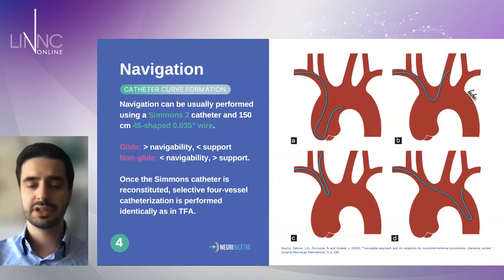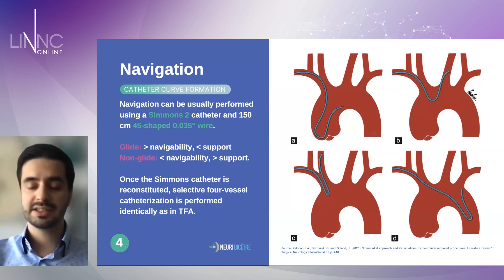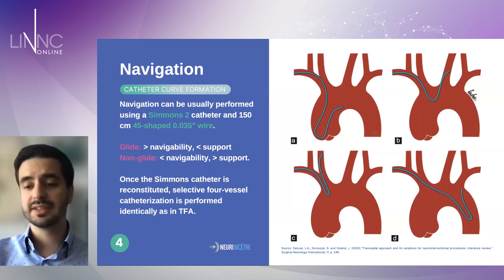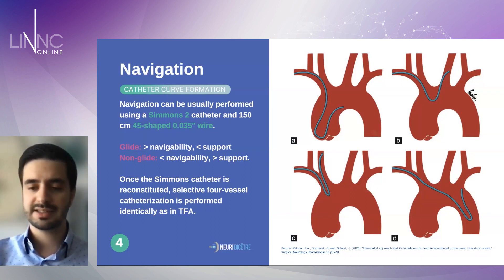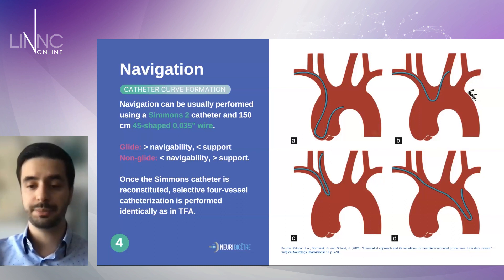After you reach the aortic arch, you should catheterize the supraortic trunks. Normally, this is done with a Simon 2 catheter, and the curvature can be formed at the ascending or descending aorta, or at one of the supraortic trunks. The best approach is to use the descending aorta, because using the ascending aorta can cause valve or heart trauma and induce arrhythmia.